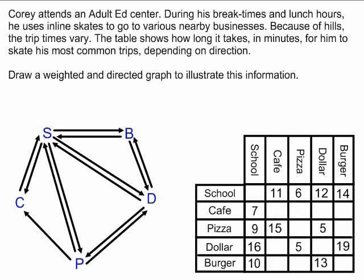The directed part of my graph is finished. Now what I have to do is show the weighting, which I show using the number of minutes — how many minutes does it take for him to do each trip?